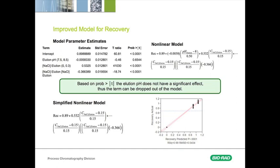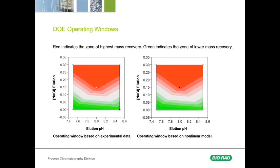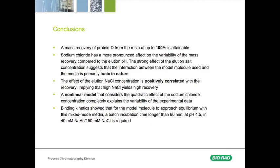Lastly, an important piece of information that is used for process robustness is the operating window. This slide presents the operating windows based both on the experimental data and on the improved model. From this window, one could define the operational ranges for the experimental parameters that will keep the target process indicator, in this case mass recovery, within the target range.